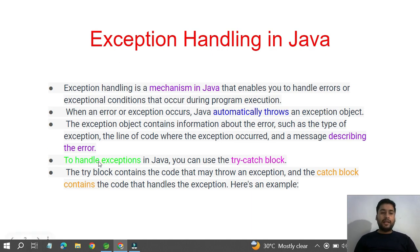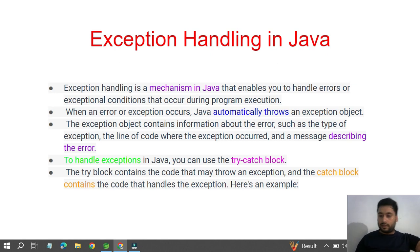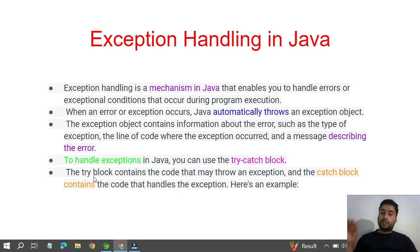To handle exceptions in Java you can use the try-catch block — that's very popular. You can also postpone or redirect an exception using the throw and throws keywords. So we use four keywords: try, catch, finally, throw, and throws. The try block contains the code that may throw an exception.